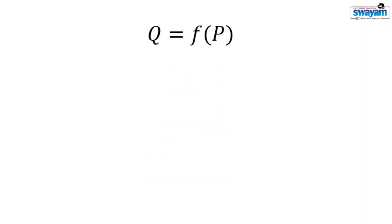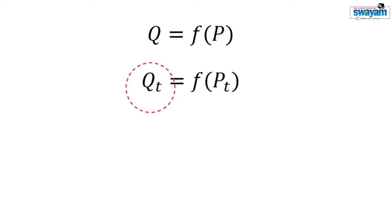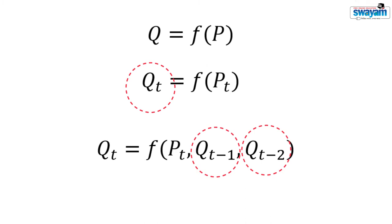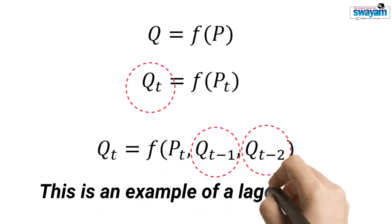You are familiar with this demand function. We may write this function such that Qt is your current demand. Your current demand depends on your demand in the previous year or the year before. We can represent the demand in the previous year as Qt-1 and the demand two years back as Qt-2, and so on. There is a gap involved in this demand function. This gap is called lag, and such models are called lagged models.